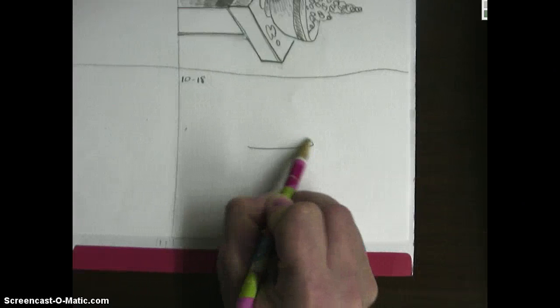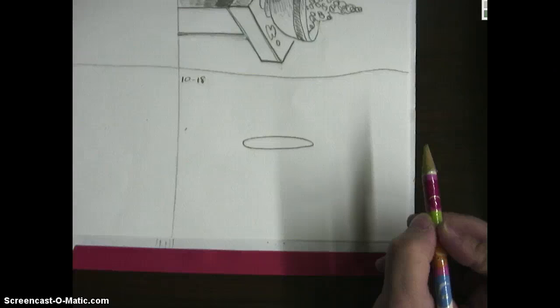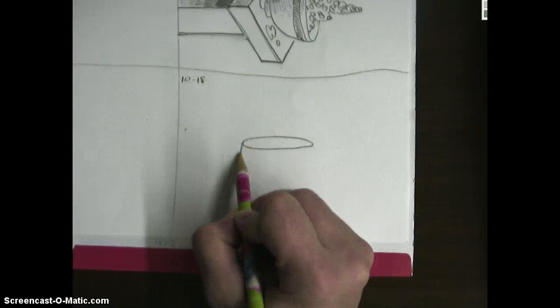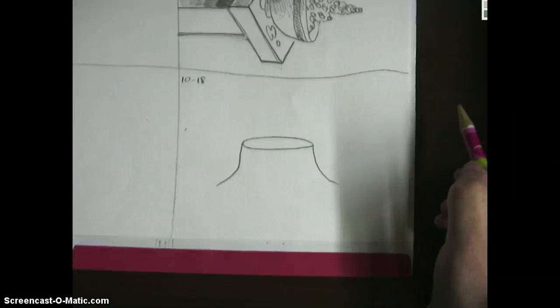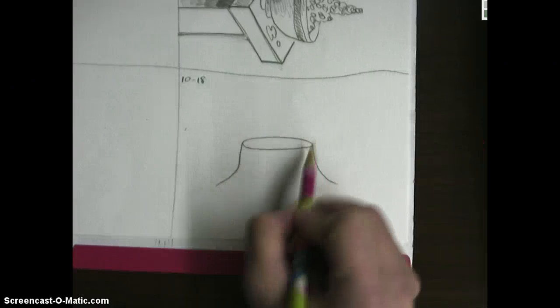We're going to start with a foreshortened circle, just like this, an oval on your paper. You're going to bring the sides down into a curve, just like that. So far just three things that you've done.